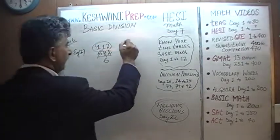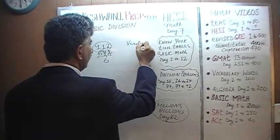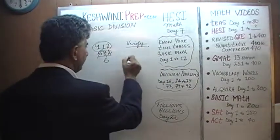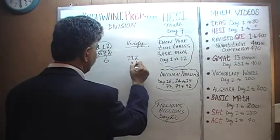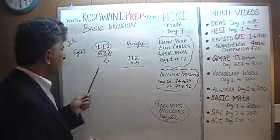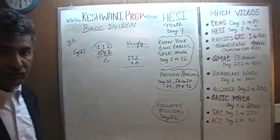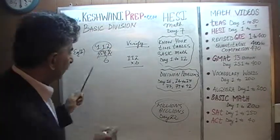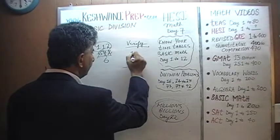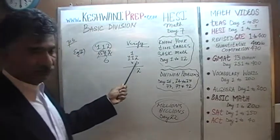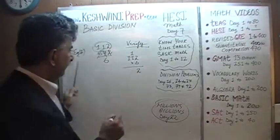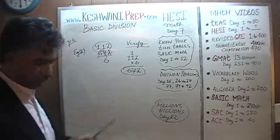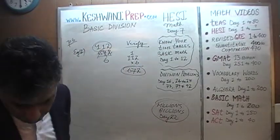Now, if you wish to verify it, it only takes a few seconds. Take 112 times 6 and you will see that it takes us back to 672. So: 2 sixes are 12, carry 1; 6 ones are 6, plus 1 is 7; and 6 ones are 6. That gives us 672.